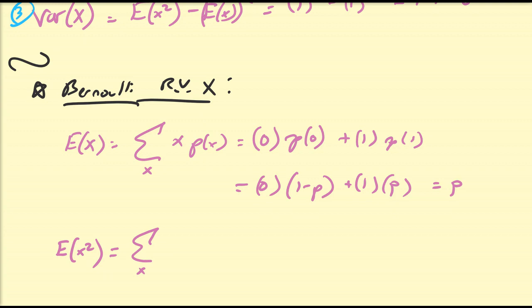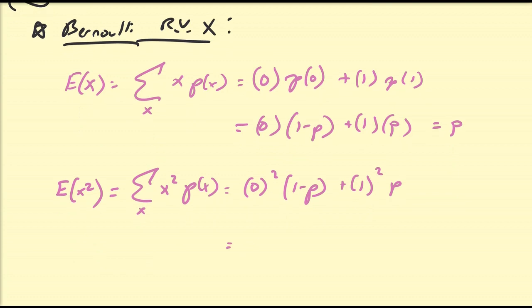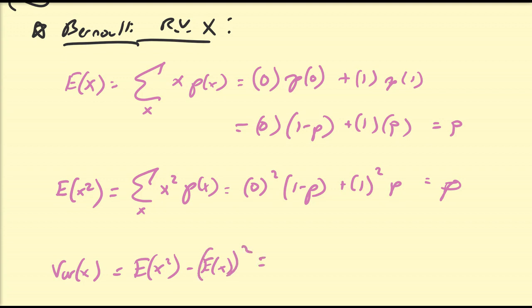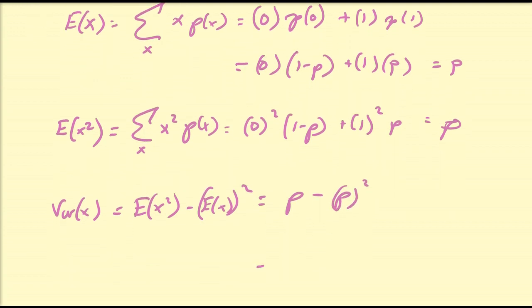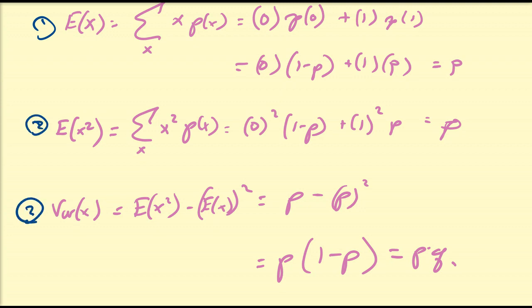The second moment is the sum over all x of x² p(x): 0² times (1 minus p) plus 1² times p. Zero squared times anything is zero, and 1² is 1, so this again equals p. The variance is the second moment minus the square of the mean: p minus p². Factoring out p gives p times (1 minus p), which is the probability of success times the probability of failure, often written as p times q. Those are the three basic properties for a Bernoulli random variable.